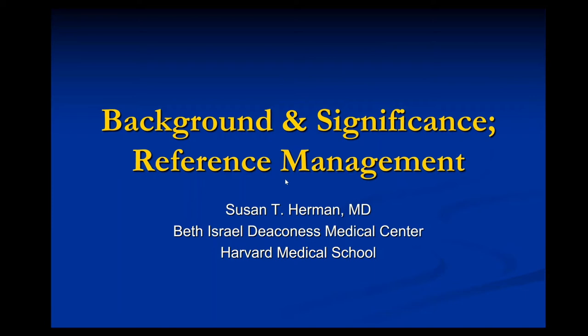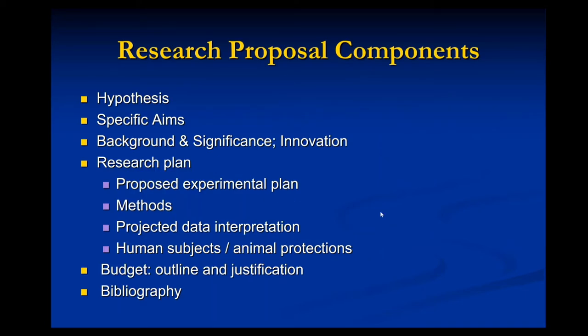I'm going to go through today how to write a background and significance section. It's going to be a pretty short discussion, but that does not mean you can give it short shrift when actually writing your grant application. This is a reasonable place to start because it will allow you to review the existing literature in your research field and really set the stage for your research project.